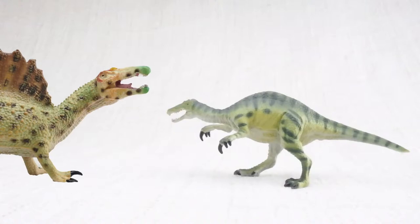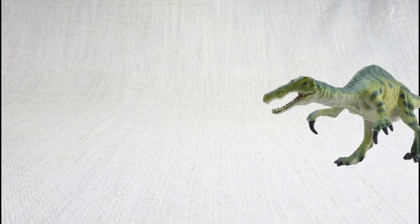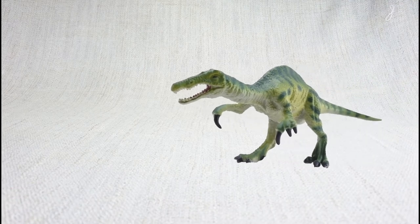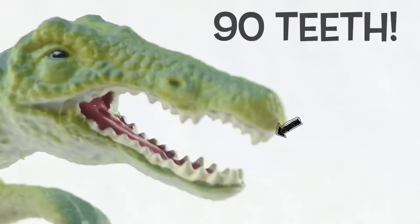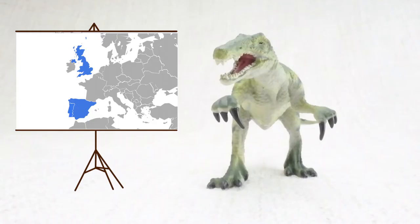Baryonyx was related to Spinosaurus and both had a similar face like a crocodile. But unlike Spinosaurus, Baryonyx spent most of its time on two legs. It had 90 teeth, twice as many as a T-Rex, and it was found in Europe. They lived about 125 million years ago in the early Cretaceous period with the Iguanodon.